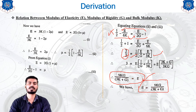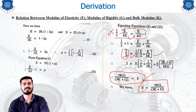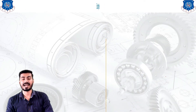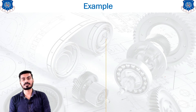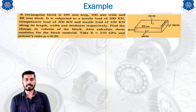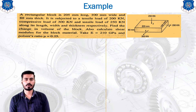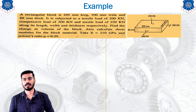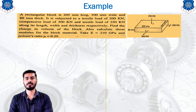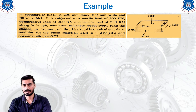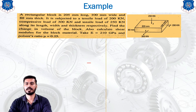This derivation can be asked in your examination for four to five marks, so be prepared. Now we move to the final slide of this lecture — a worked example based on the concepts learned. The data given: a rectangular block is 205 mm long, 100 mm wide, and 80 mm thick. Each dimension is represented in the diagram provided.